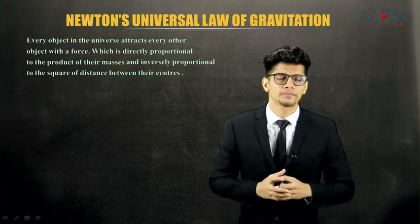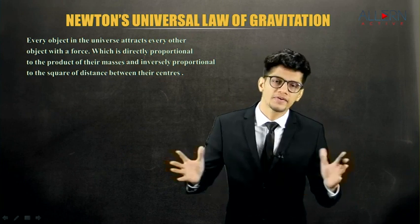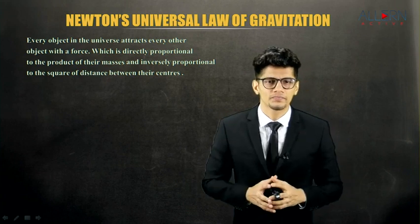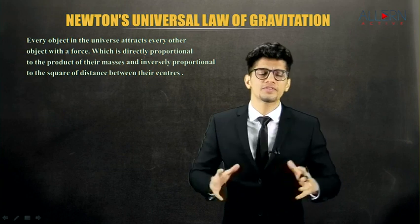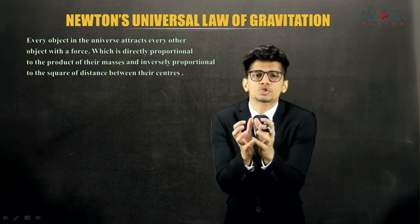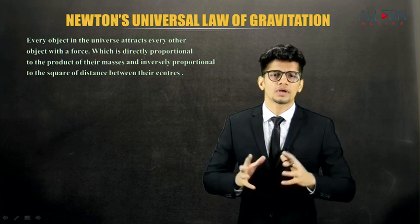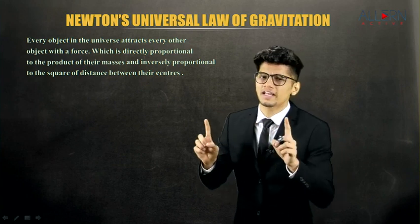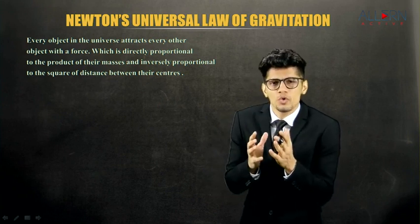The first part of the statement says every object in the universe attracts every other object. This is strange — if every object attracts every other object, then all objects should be very close to each other, right? But that doesn't happen, which means we've only understood the first half of the statement.